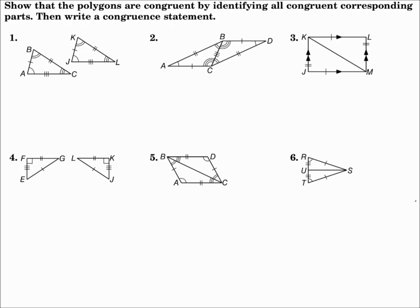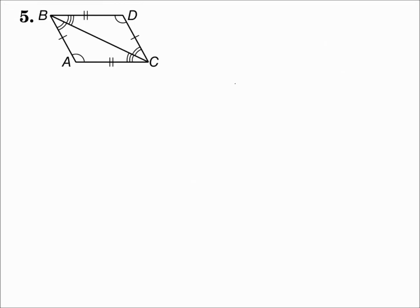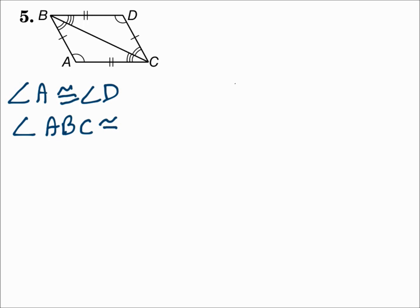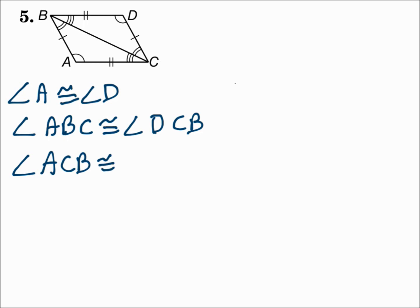Show that the polygons are congruent by identifying all congruent corresponding parts, then write a congruent statement. Angle A is congruent to angle D — they both have one arc. Angle ABC has a double arc and is congruent to angle DCB, which also has a double arc. Angle ACB is the triple arc and is congruent to angle DBC. Match up the angles according to how many arcs they have.